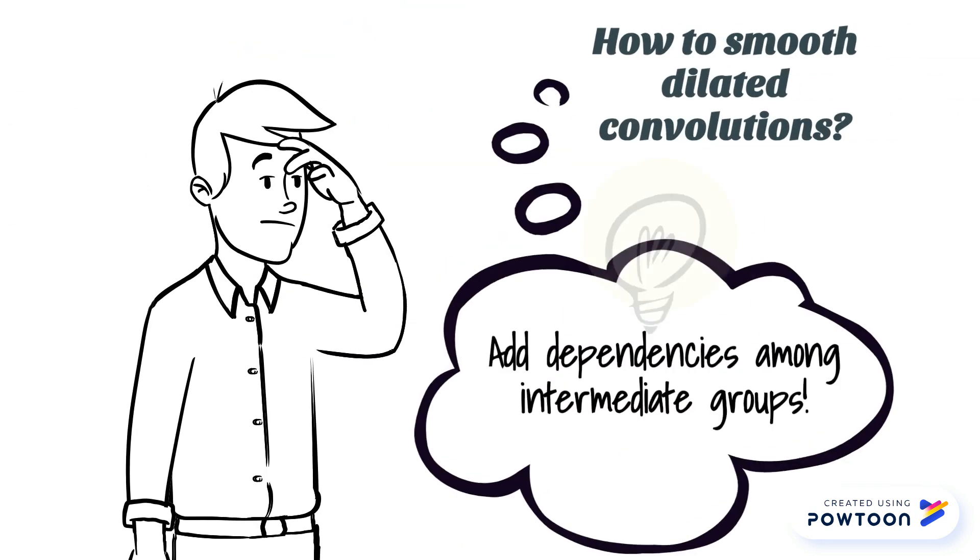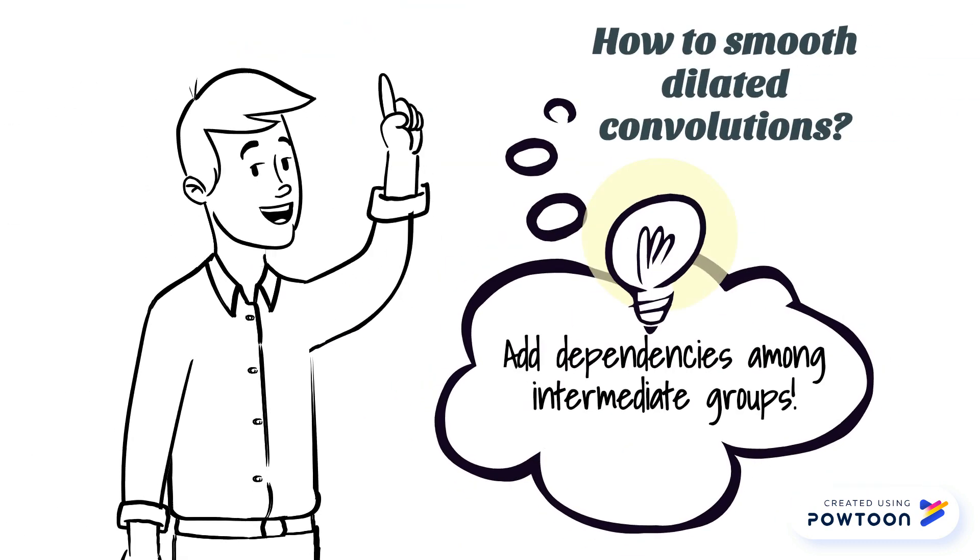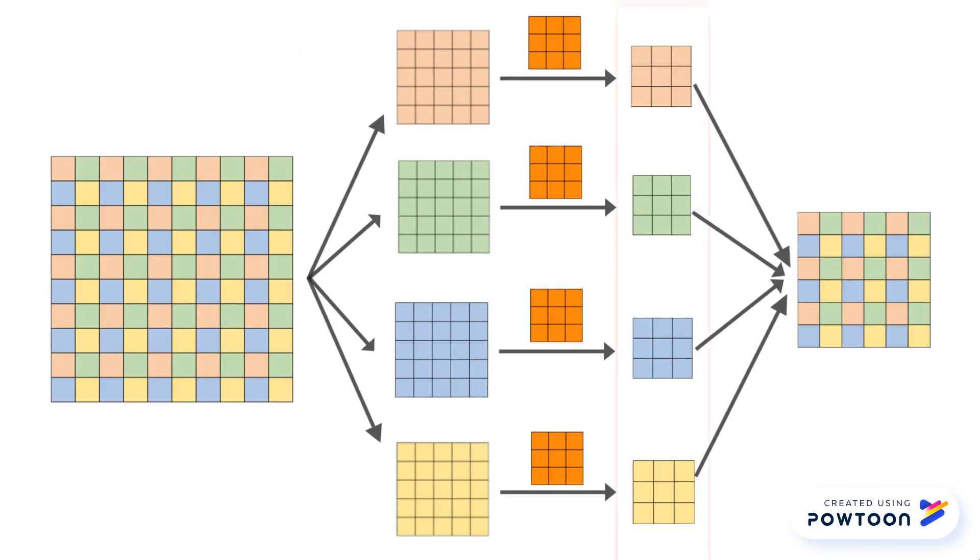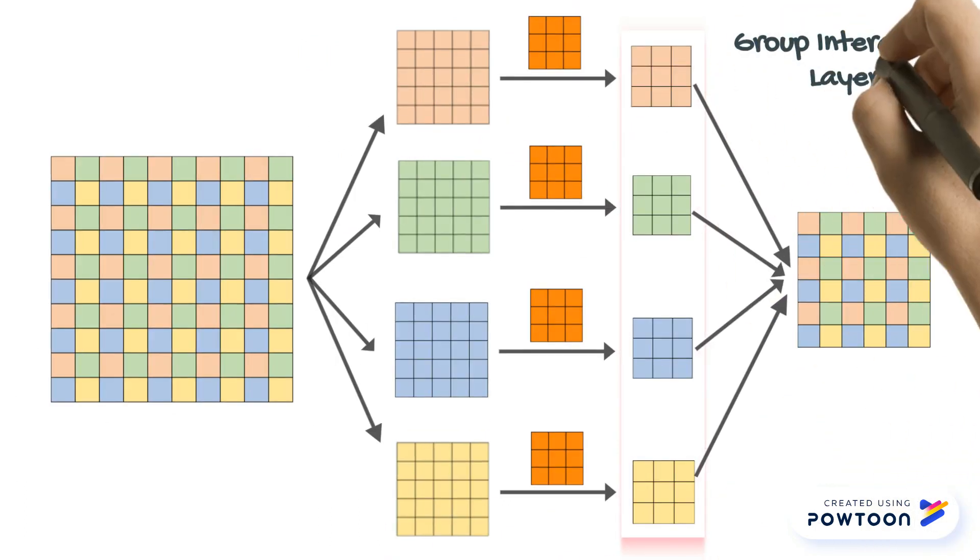Based on it, we can smooth dilated convolutions by adding dependencies among intermediate groups. Our first solution uses a group interaction layer.